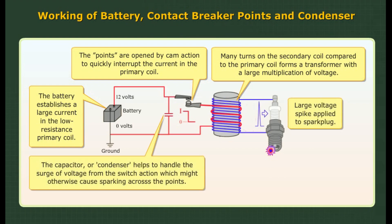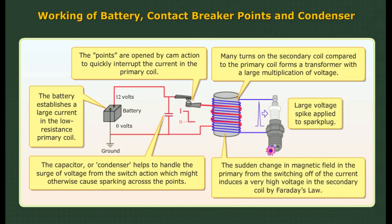The capacitor or condenser helps handle the surge of voltage from the switch action, which might otherwise cause sparking across the points. The sudden change in the magnetic field in the primary from the switching off of the current induces a very high voltage in the secondary coil by Faraday's law.